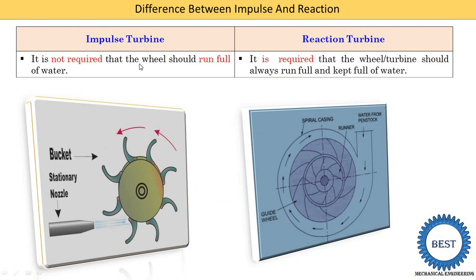The next point is that in an impulse turbine it is not required that the wheel shall run full of water — the bucket or wheel does not need to be completely full of water. The water strikes only a minor part of the circumference; if we use two, three, or six nozzles it covers more circumference but not the full. In a reaction turbine the runner is completely filled with water. It is required that the wheel or turbine shall always run completely full of water — all 360 degrees of the runner circumference are filled. In the impulse turbine, water covers only a minor angle.